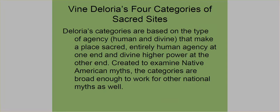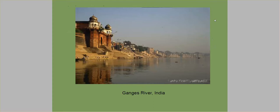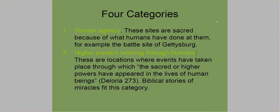Vine Deloria also writes a lot about Native American culture, and his categories are based on different criteria than Gulliford's. He has four categories, and here's the Ganges River in India. His categories have to do with how sites are sacred in terms of higher powers or humans. A site can be sacred because of something that happened to humans there. A battlefield could be important because of what humans did there, the humans who died for a particular cause — so it's not always related to a mythical story, it can be related to historical events as well.